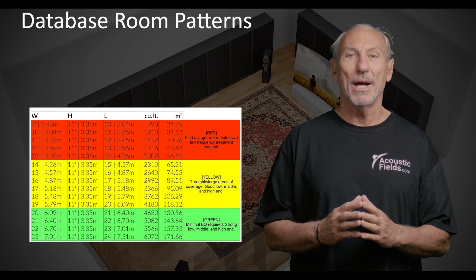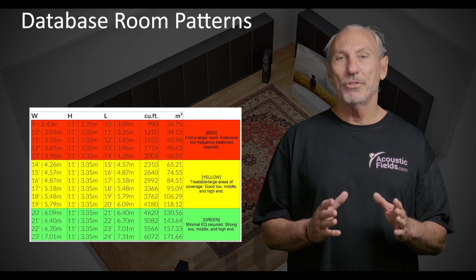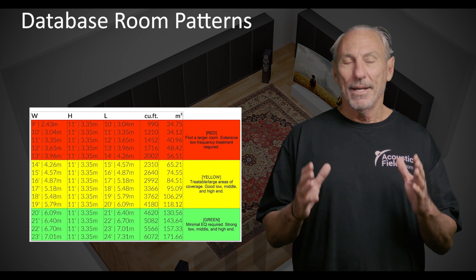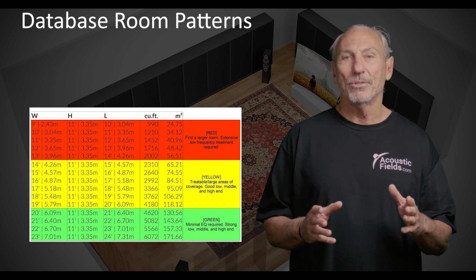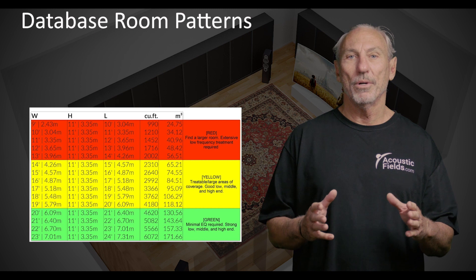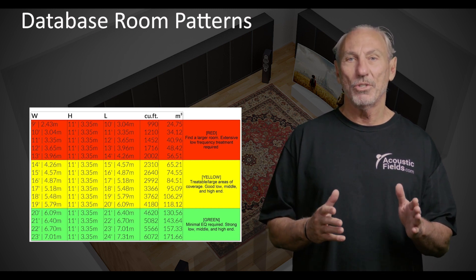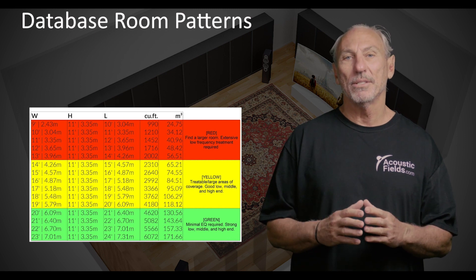As we go through this video you'll get a pretty good idea of your room size and volume and where the treatment is supposed to go, how much and all of that. So let's first start with our red, yellow and green guideline chart. This is a chart I put together based on our database, and in the database I started to see certain patterns. I used those patterns for maximizing treatment of all the biggest issues in these room sizes and volumes.